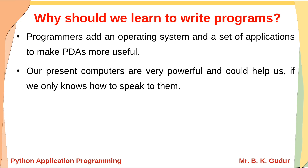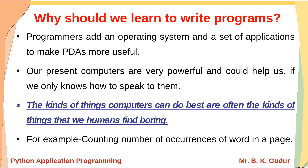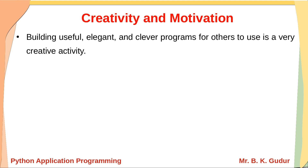Our present computers are very powerful and can help us only if we know how to speak to them. The kinds of things computers do best are often the kinds of things humans find boring — like a cashier continuously counting currency, or counting occurrences of a word in a book. Once you get bored, your accuracy decreases. But a computer's accuracy remains constant whether it is counting for the first or the last time.